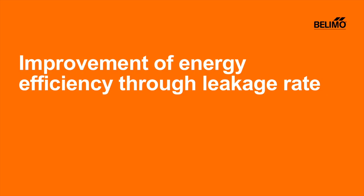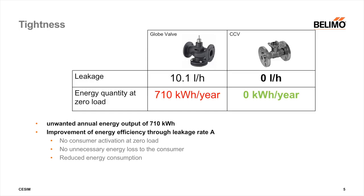Improvement of energy efficiency through a better leakage rate. If a valve leaks when closed, energy is transported from the generator to the heat exchanger. This amount of energy is delivered to the heat exchanger, and it can be assumed that this energy output is not required if there is no flow or power requirement from the valve. This amount of energy, therefore, can be regarded as a loss.